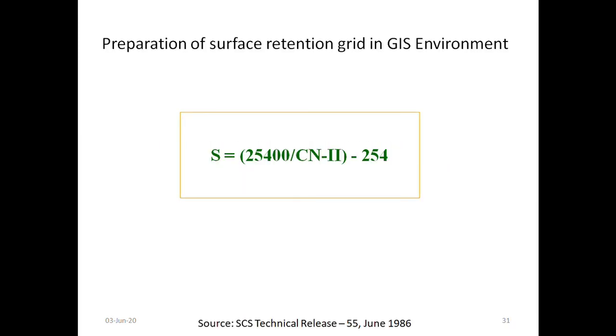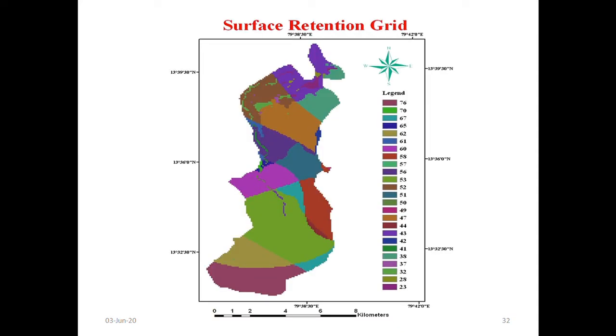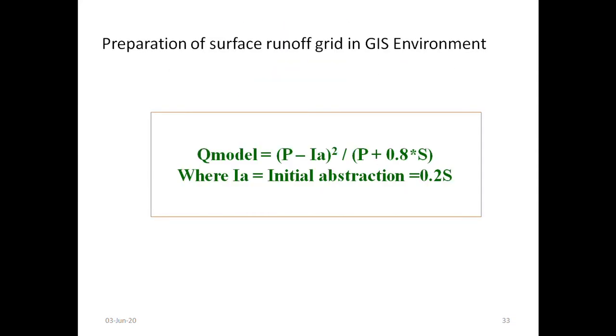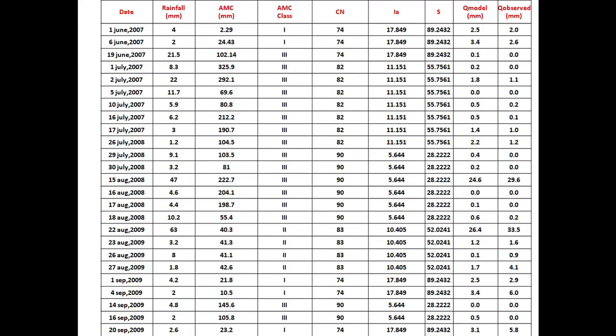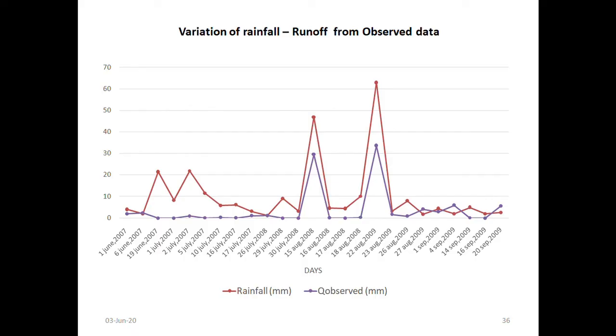Finally coming to the results, I have discussed already this surface retention grid is prepared and basically this is one result. Based on the Q model which I have explained in the methodology, that is the formula, here 0.2S means 20 percent of surface retention is taken as an assumption. A runoff grid is developed and based on this runoff grid developed through remote sensing and GIS, it was compared with the Q observed, that is observed practical runoff based on randomly selected 25 values of 2007, 2008, 2009 data.